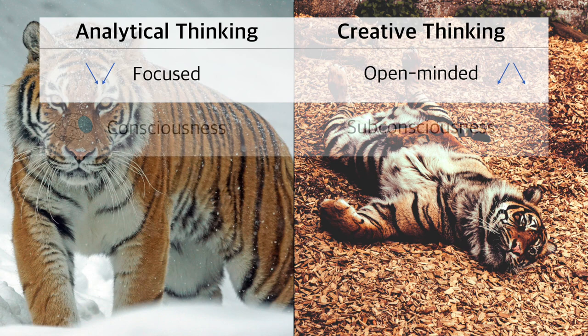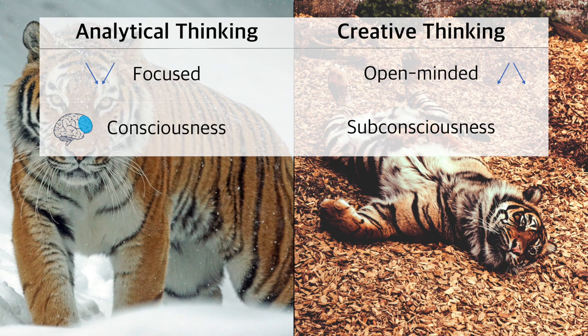Analytical thinking is highly dependent on your conscious thinking, on your prefrontal cortex — this is where all the rationality happens. Thinking creatively also depends on your consciousness, but also your subconsciousness. It's more about the overall connectivity within your brain. You may have heard about the incubation phase where you let go and relax and suddenly an idea comes up — those are moments where overall connectivity was highly productive and your subconscious brain parts played a crucial role.